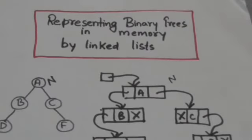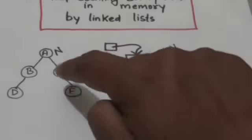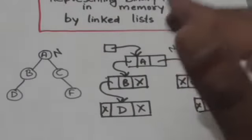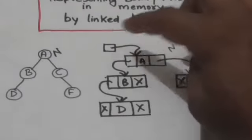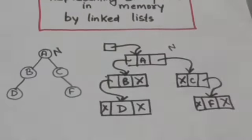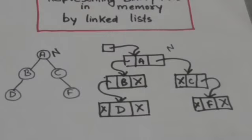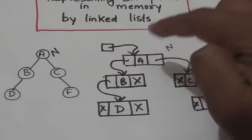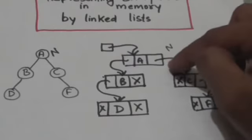Hello friends, welcome back. In this tutorial we will learn how we can represent binary trees in memory by linked lists. When a binary tree is represented by a linked list in memory, each node of the linked list corresponds to a node of the binary tree. The list pointer points to the node of the linked list which corresponds to the root of the binary tree. If the binary tree is empty, the list pointer variable will contain null value. Each node of the linked list is divided into three parts.